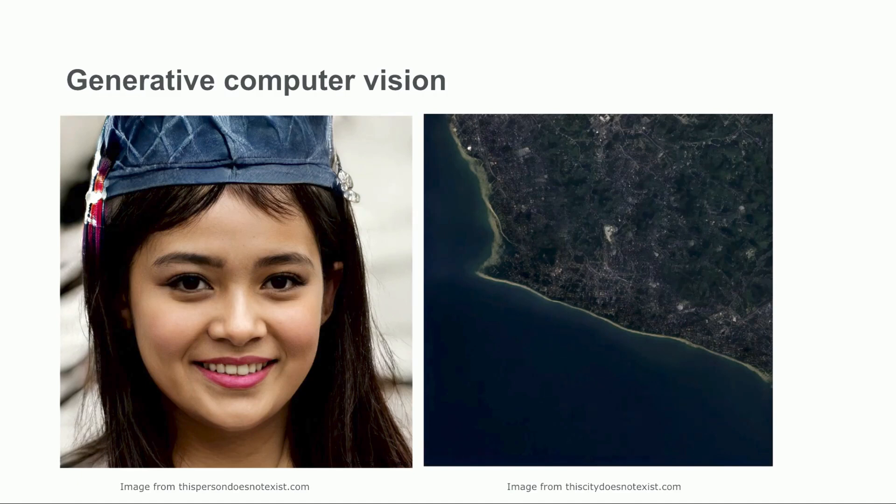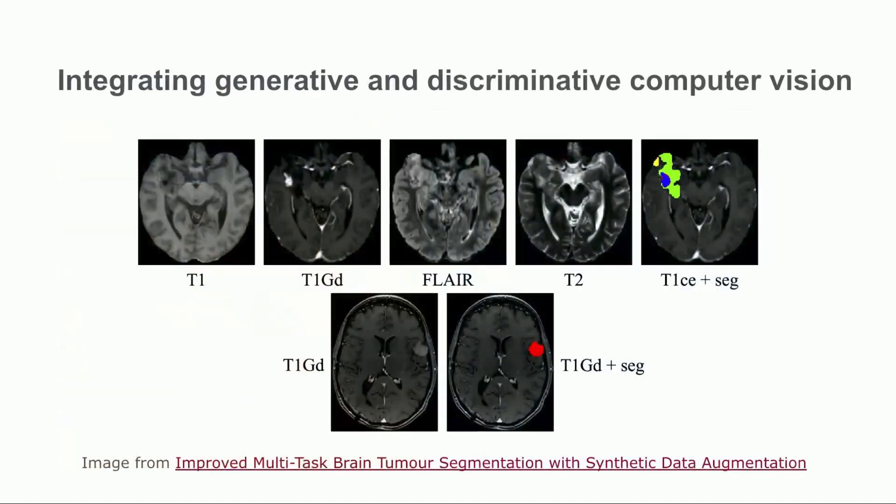Websites like thispersondoesnotexist.com demonstrate this model's ability to generate photorealistic images of entities that are not real. A powerful and recent trend is using realistic synthetic images produced with generative methods to extend training data sets for discriminative tasks.